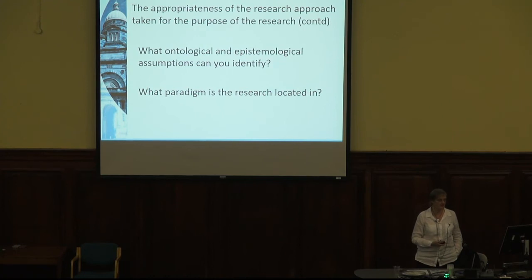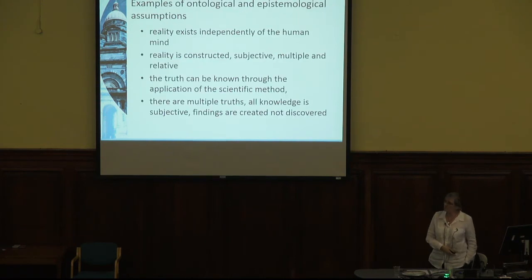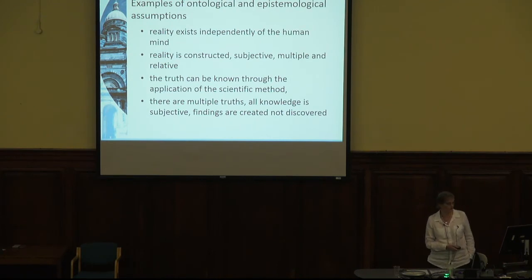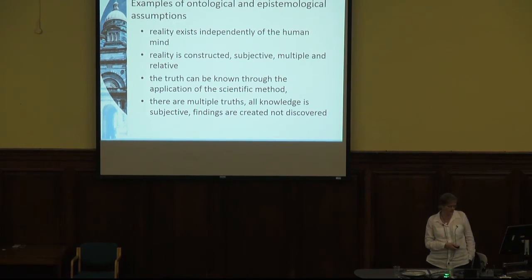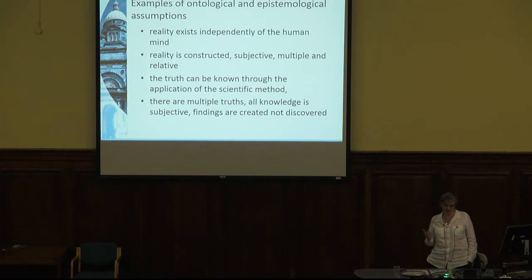An opinion is just 'this is what I think,' but an argument is 'this is what I think and this is why' — you give evidence behind your opinion. That's what makes it an argument, and it's arguments we're looking for. Some examples of ontological and epistemological assumptions: the first two examples relate to reality — they're ontological — and the second two relate to what can be known — epistemological. These aren't the only possible assumptions; I'm just giving examples of the kinds of things I'm talking about.